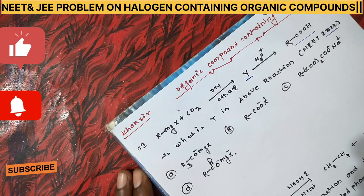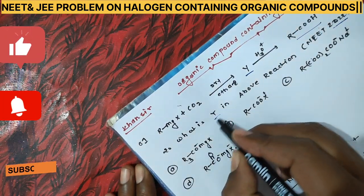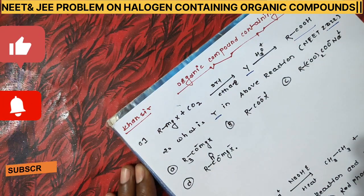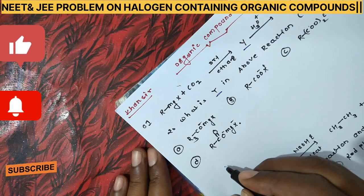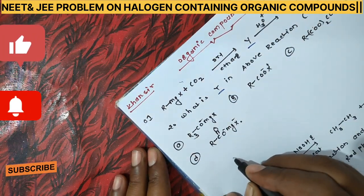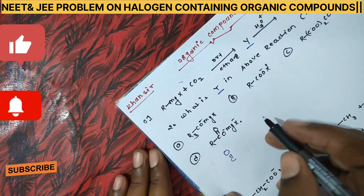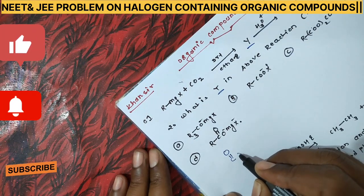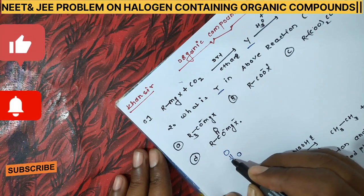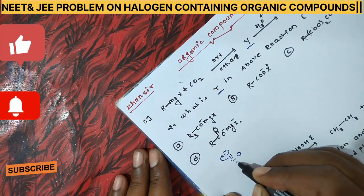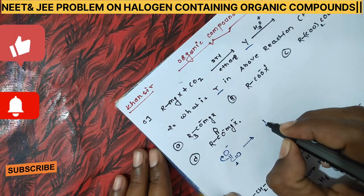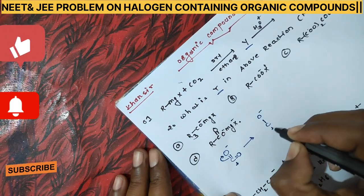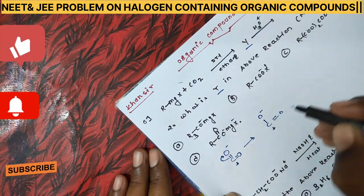So what will be Y in this reaction? This is basically a Grignard reagent reaction. When our Grignard reagent reacts on CO₂, a bond shift occurs — a positive charge comes here and a negative charge comes here. So we get this type of product with a negative and positive charge, and a double bond here.